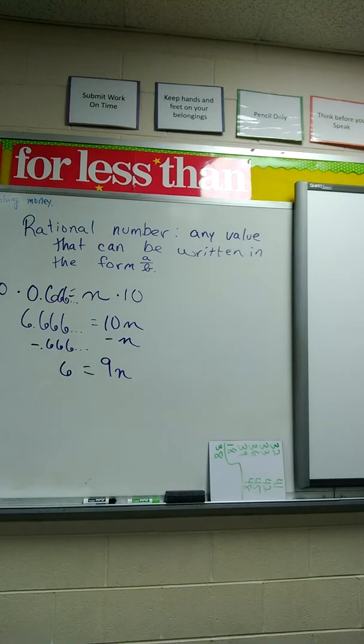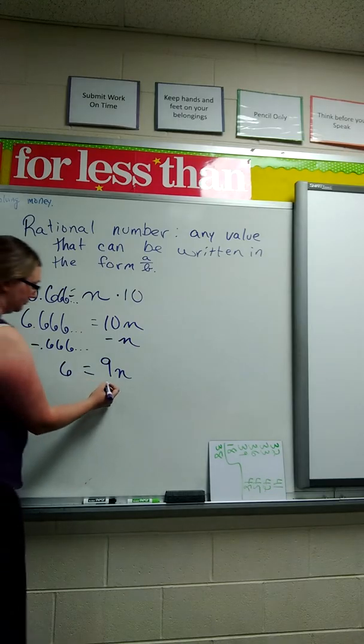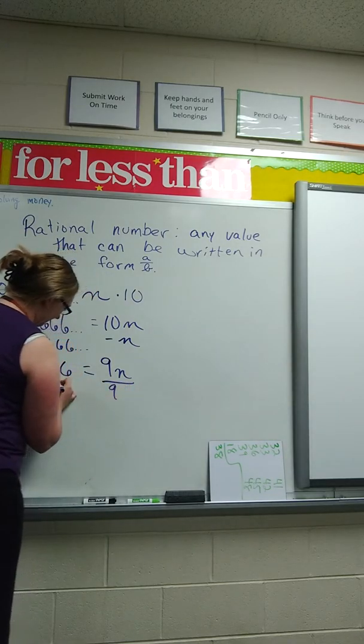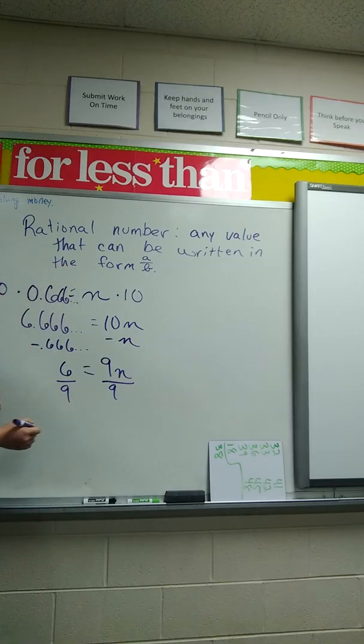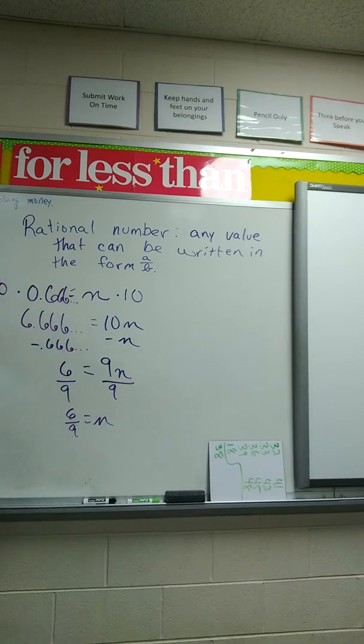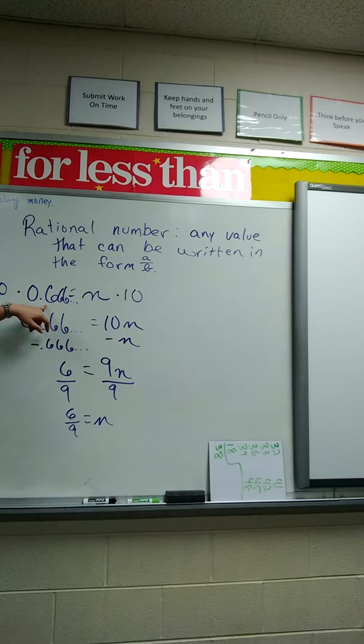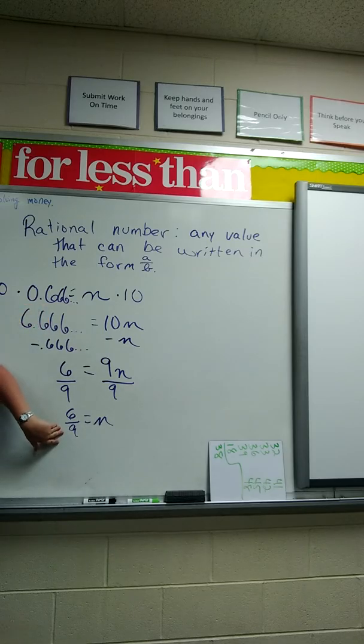We're going to divide both sides by 9 to get n by itself. That would say that 6. That would say that 6 9ths equal to n. n is still my decimal value, correct? Yes? Can I simplify six ninths?